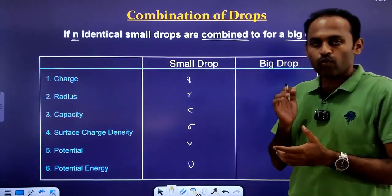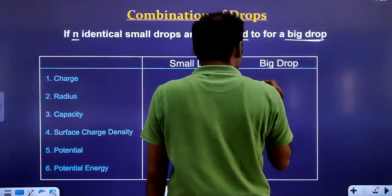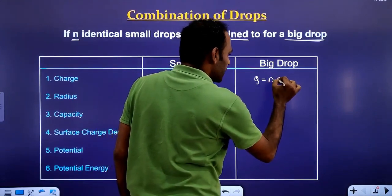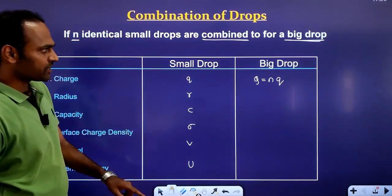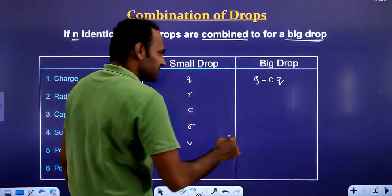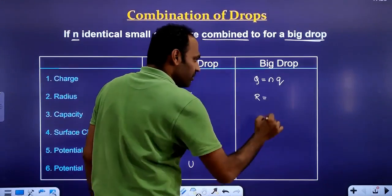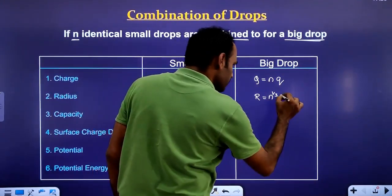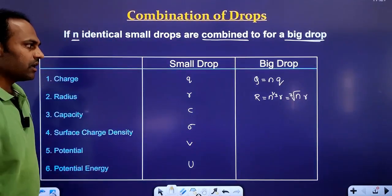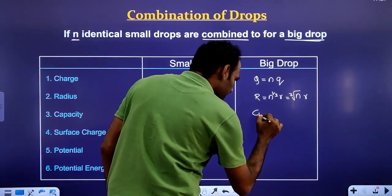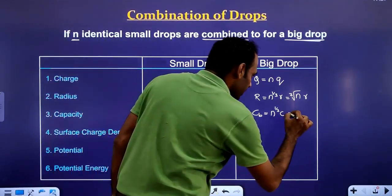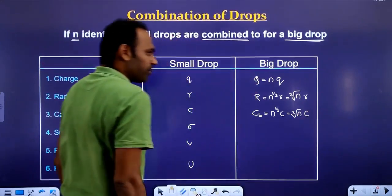The charge of the big drop is equal to N times the charge on each drop. For the radius: the radius of the big drop will be equal to N raised to 1/3 times the radius of the small drop, or simply cube root of N times the radius of the small drop. The capacity of the big drop will be equal to N raised to 1/3 times the capacity of the small drop, or cube root of N into C.